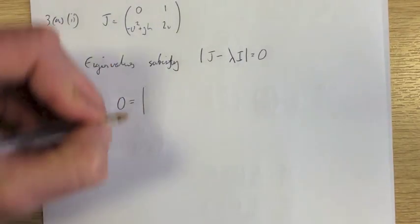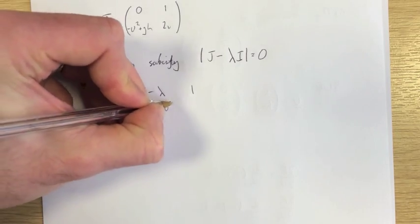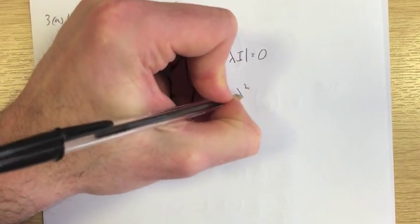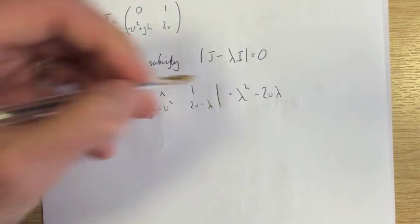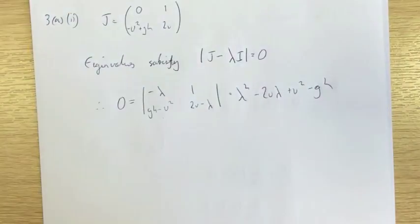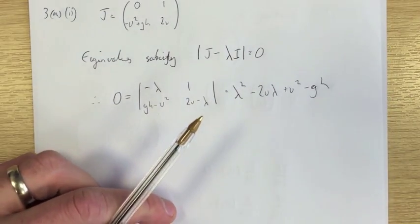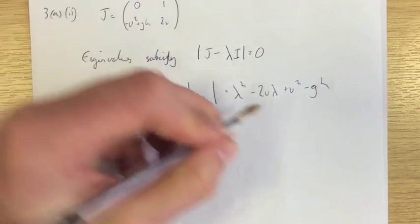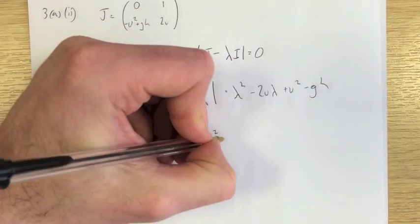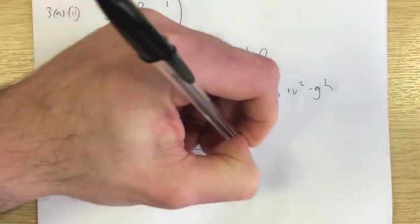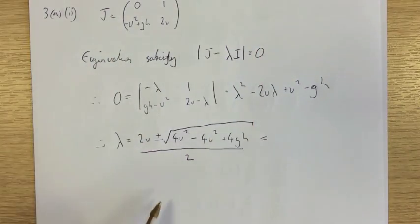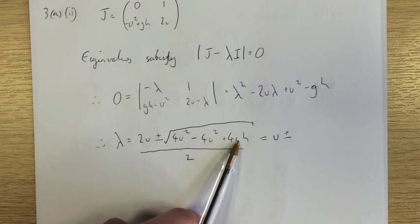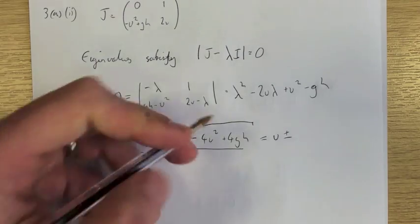Expanding the 2×2 determinant gives lambda squared minus 2U lambda minus (U squared minus 2GH) equals zero, i.e. lambda squared minus 2U lambda minus U squared plus 2GH = 0. Wait — we get lambda squared minus 2U lambda plus (U squared minus GH... let me apply the quadratic formula: lambda equals (2U plus or minus the square root of 4U squared minus 4(U squared minus 2GH... actually 4GH)) all over 2. The 4U squared terms cancel, leaving lambda equals U plus or minus root GH.